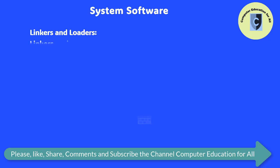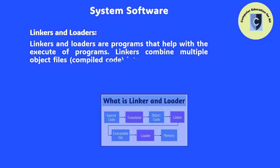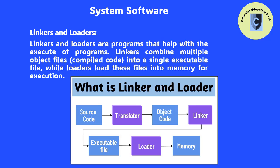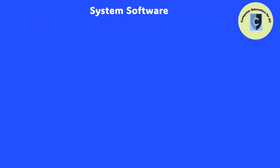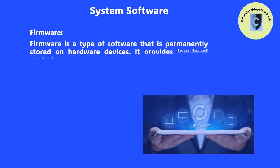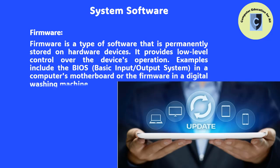Linkers and Loaders: Linkers and loaders are programs that help with the execution of programs. Linkers combine multiple object files (compiled code) into a single executable file, while loaders load these files into memory for execution. Firmware: Firmware is a type of software permanently stored on hardware devices, providing low-level control over the device's operation. Examples include the BIOS (Basic Input/Output System) in a computer's motherboard.